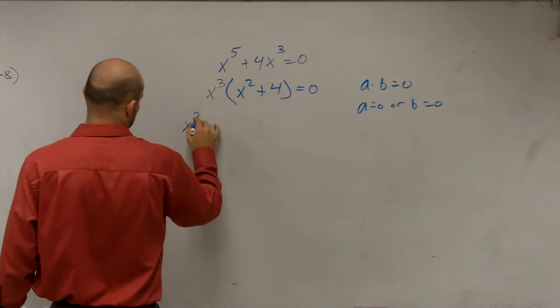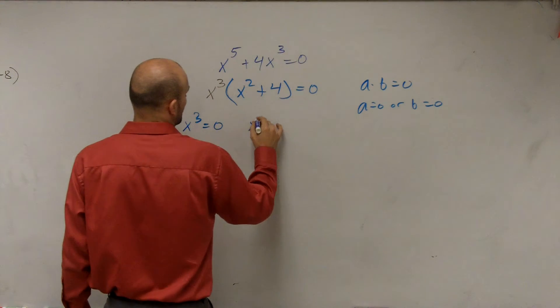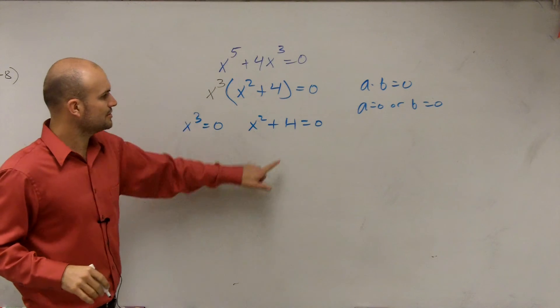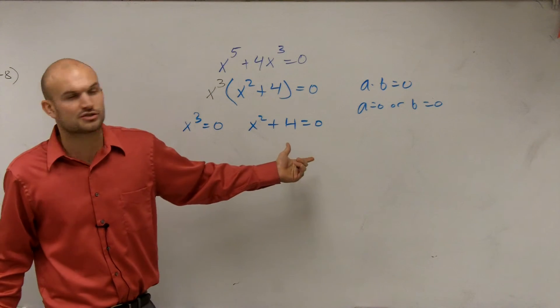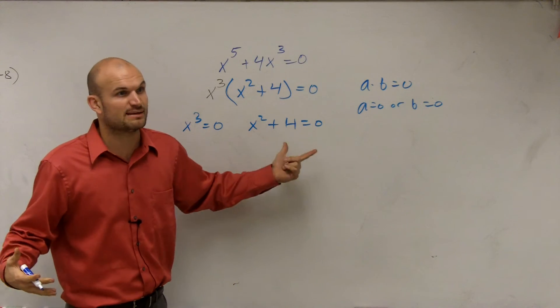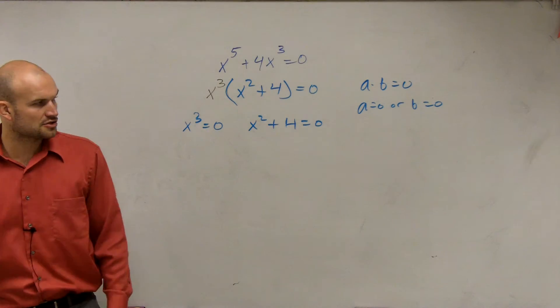So therefore, I can now say x cubed equals 0, or x squared plus 4 equals 0. Now there's a couple ways you could do this. You could just solve for x by using the square root method. Or you could factor this actually even further down, kind of like what we did before. But we'll just solve it by using the square root property.